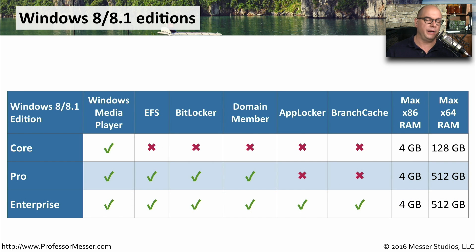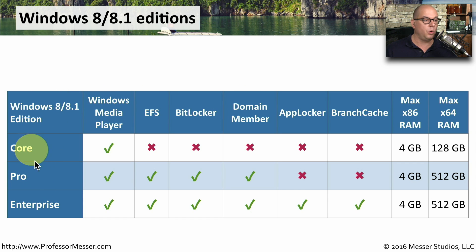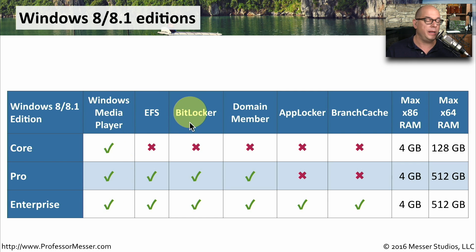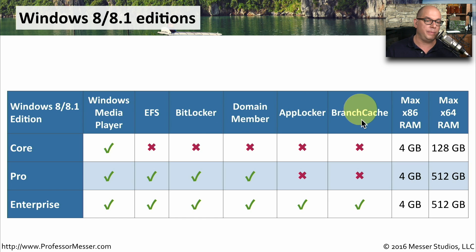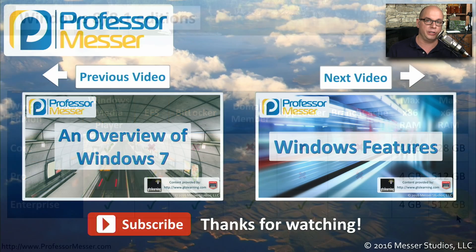Here's a functionality summary of how the three editions compare. We're looking at Windows 8 and 8.1 Core, Pro, and Enterprise, and comparing features including Windows Media Player, the Encrypting File System, BitLocker full disk encryption, Active Directory domain membership, AppLocker capabilities, and BranchCache. You can also see the maximum memory supported for the 32-bit and 64-bit versions of each edition.